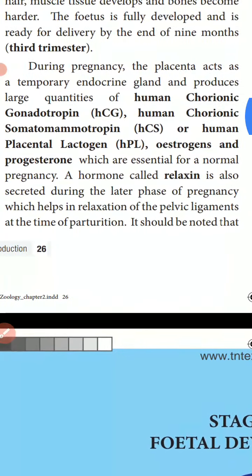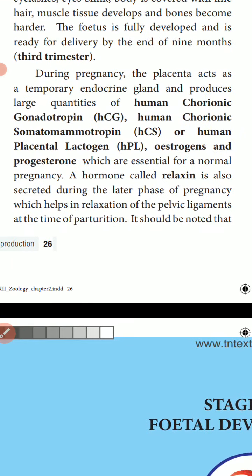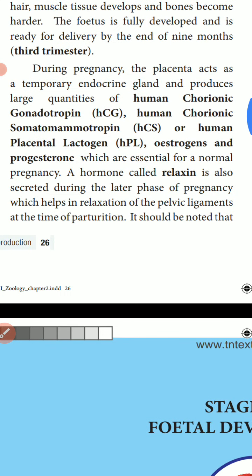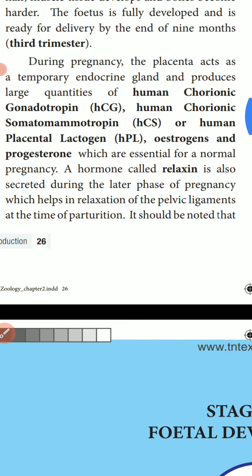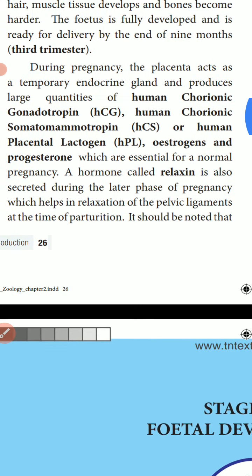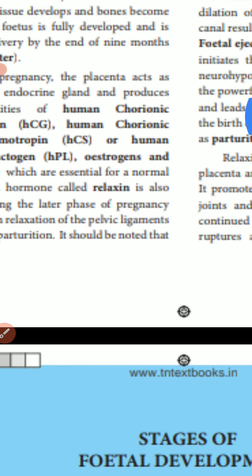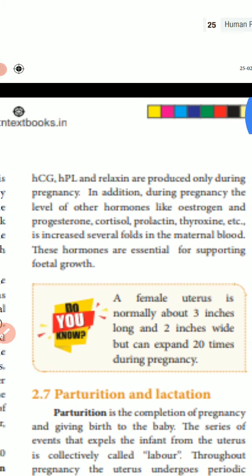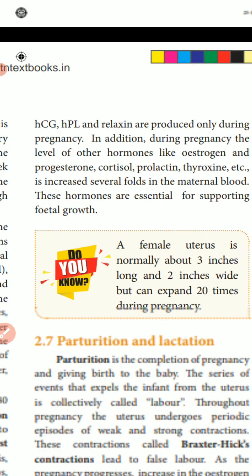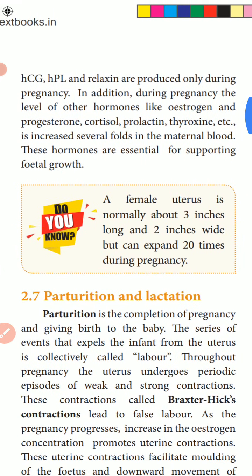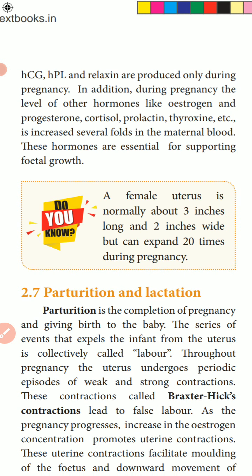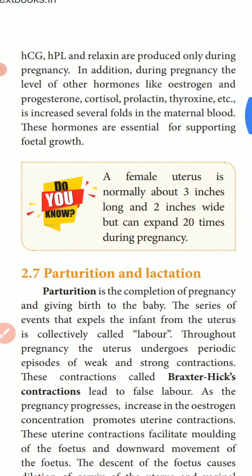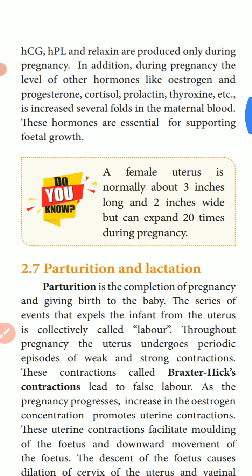A hormone called relaxin is also secreted during the later phase of pregnancy, which helps in the relaxation of pelvic ligaments at the time of parturition. HCG, HPL, and relaxin are produced only during pregnancy. In addition, during pregnancy, the levels of estrogen, progesterone, cortisol, prolactin, thyroxin, etc., increase several-fold in maternal blood, and are essential for supporting fetal growth.